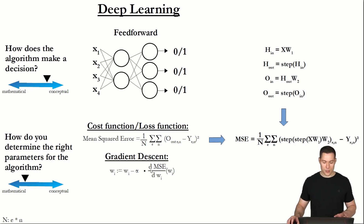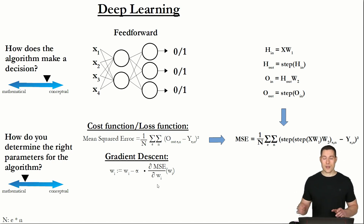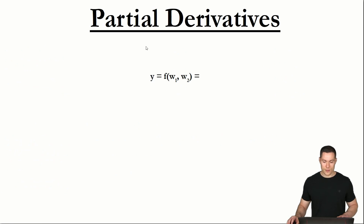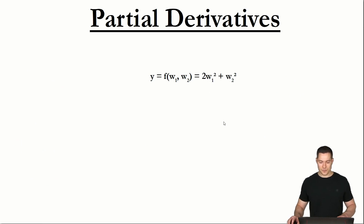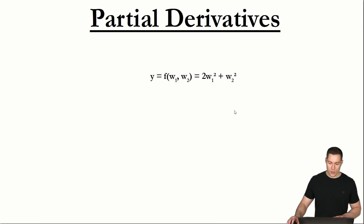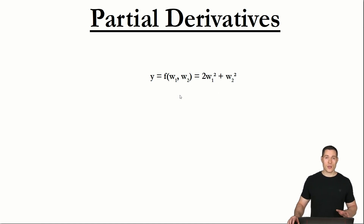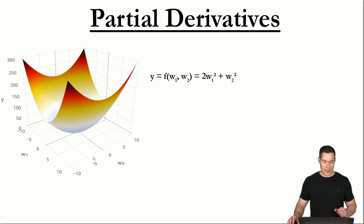Because of that, we have to make use of partial derivatives, not just regular derivatives. Partial derivatives are denoted not by the regular d, but by this stylized version of a d. Let's look at a simpler function than our mean squared error function to explain partial derivatives. Let's say y is a function of weight 1 and weight 2. Since we now have two independent variables, the graph is going to be a 3D graph.